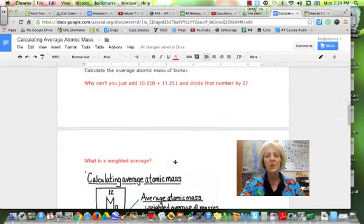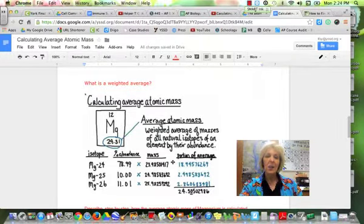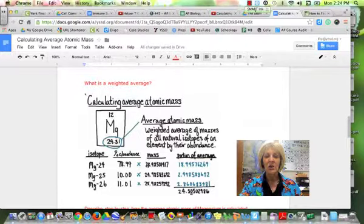So what we do is we take a weighted average. And the way you take a weighted average is you take the percent abundance of that isotope and you multiply it times its actual mass. All right, so here, let me give you an example.